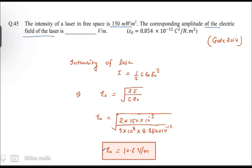The intensity of the laser is given by the expression I = (1/2) ε₀ c E₀². This is the expression for the intensity of laser, where c is the speed of light.